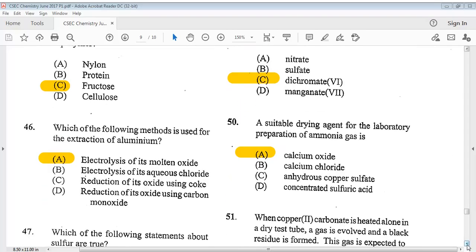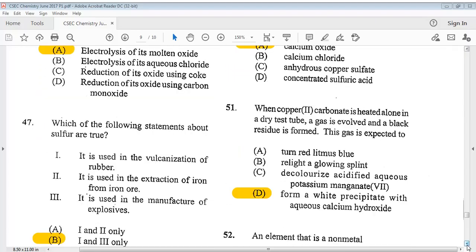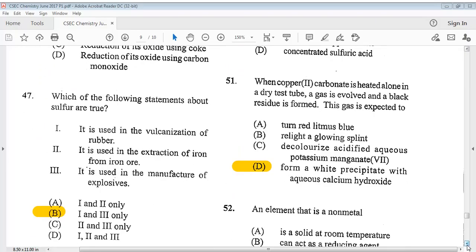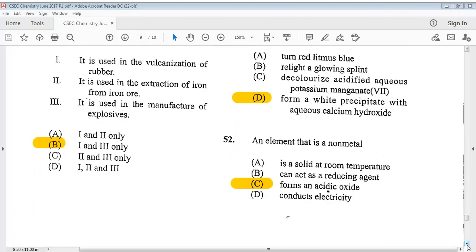Question 46 says which of the following methods is used for the extraction of aluminum? The answer is A, electrolysis of its molten oxide. Question 47 says which of the following statements about sulfur are true? 1. It is used in the vulcanization of rubber. 2. It is used in the extraction of iron from iron ore. 3. It is used in the manufacture of explosives. The answer is B, 1 and 3 only.